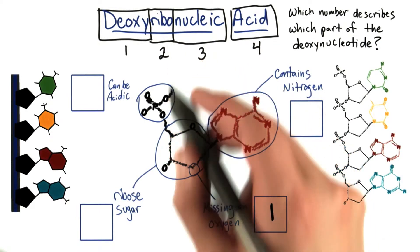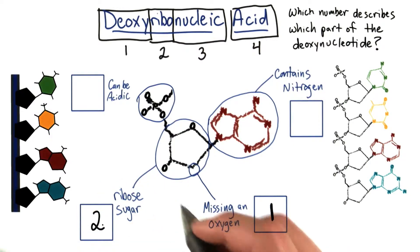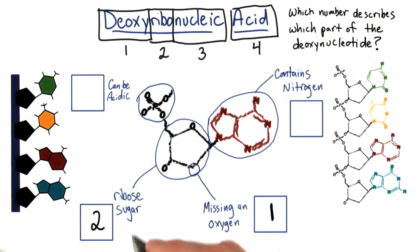The next part, ribo, indicates that there's a ribose sugar as part of the deoxynucleotide. This is the sugar molecule called a ribose sugar, so that's what the ribo represents in the name.